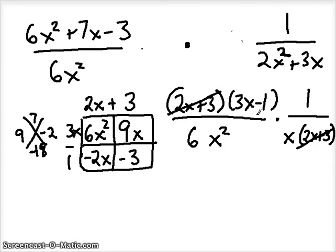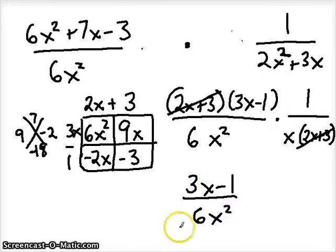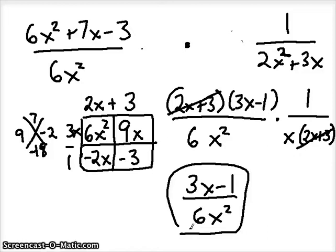And that is about it. So we're left with 3x minus 1 on top, and 6x squared on the bottom. Sorry, not 6x squared. Whoops. There we go, x squared times x. Maybe you caught that. 6x cubed on the bottom.